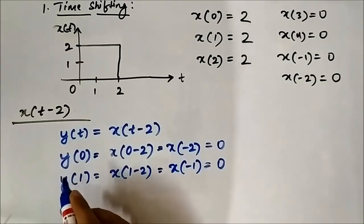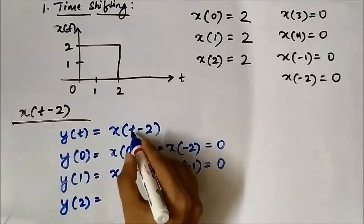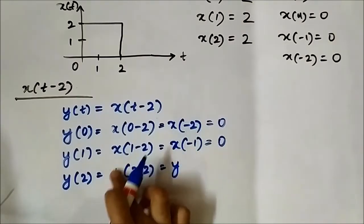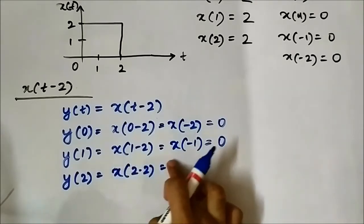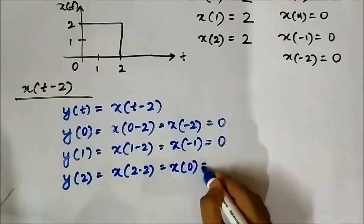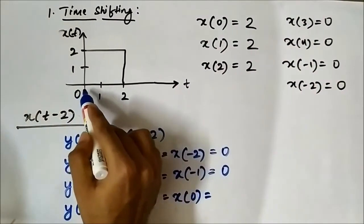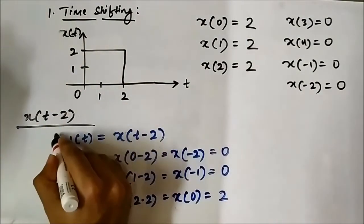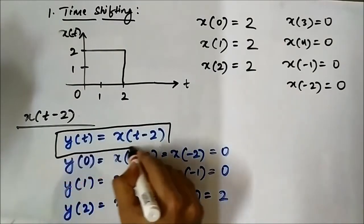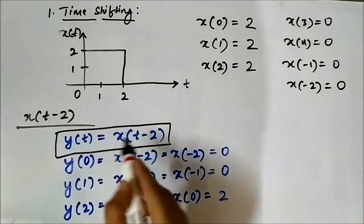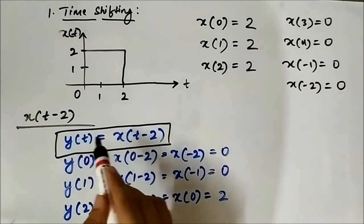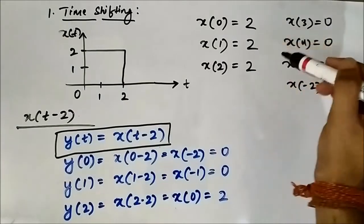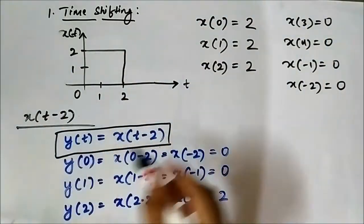At y(2), we substitute t=2: x(2-2) = x(0) = 2. So y(2) = 2. This step is very important — we have equated the new signal y(t) with x(t-2), so we can determine values of y(t) at all points from the known values of x(t).